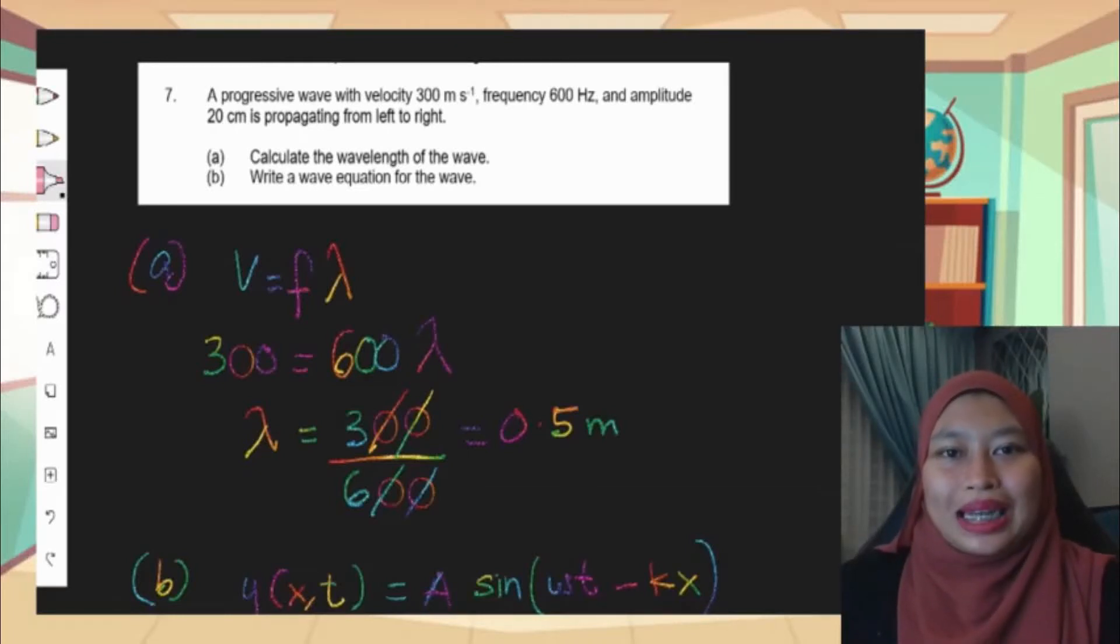Hi, Assalamualaikum. So let's see problem 7. A progressive wave with velocity 300 meters per second, frequency 600 hertz, and amplitude 20 cm is propagating from left to right.